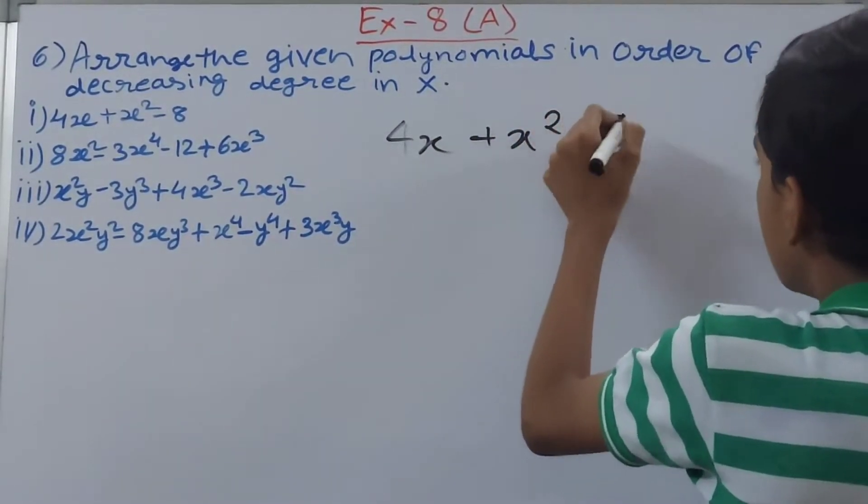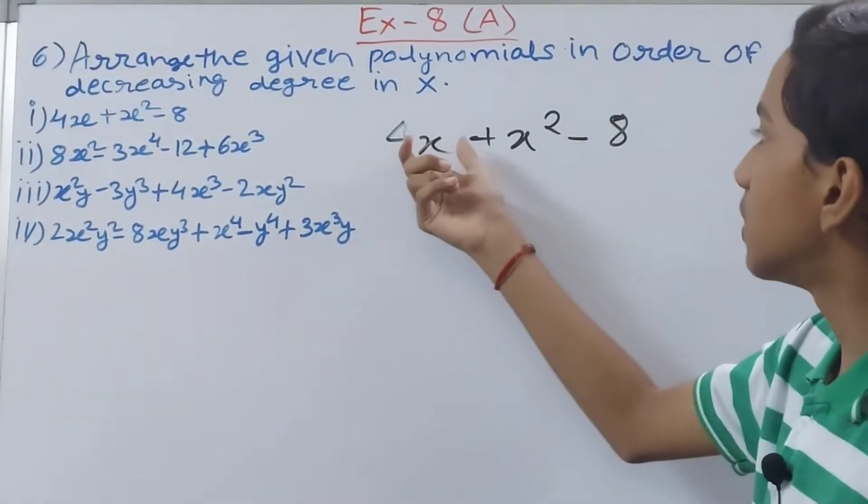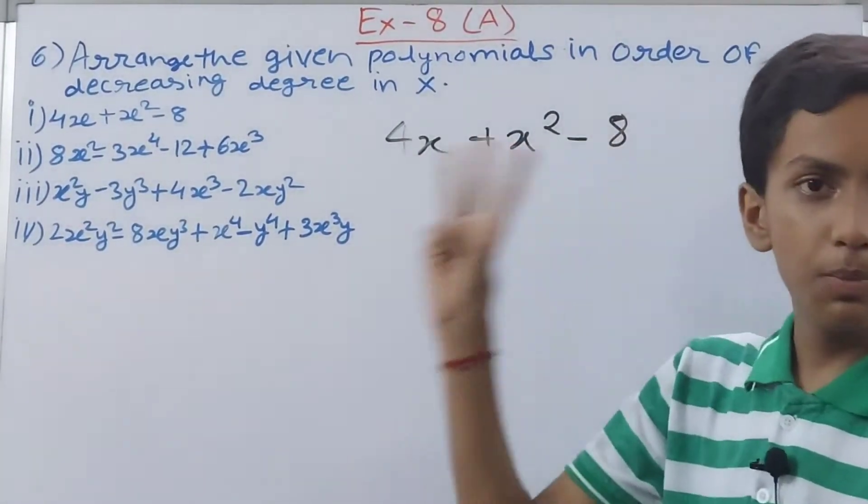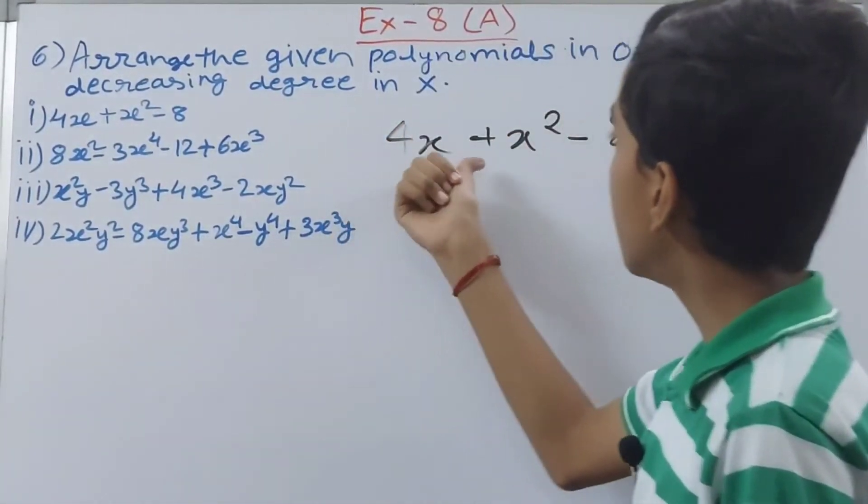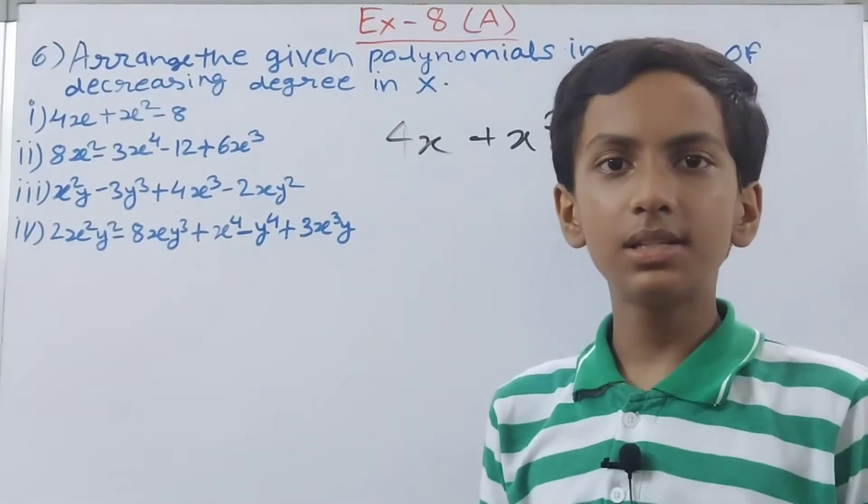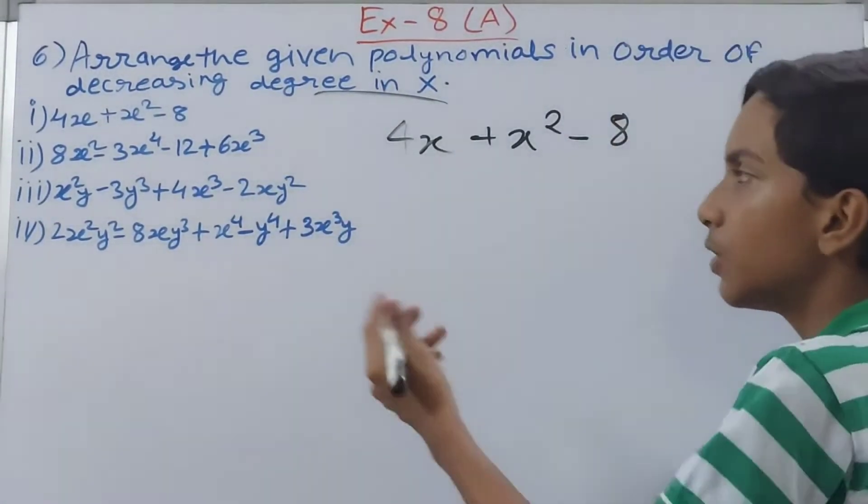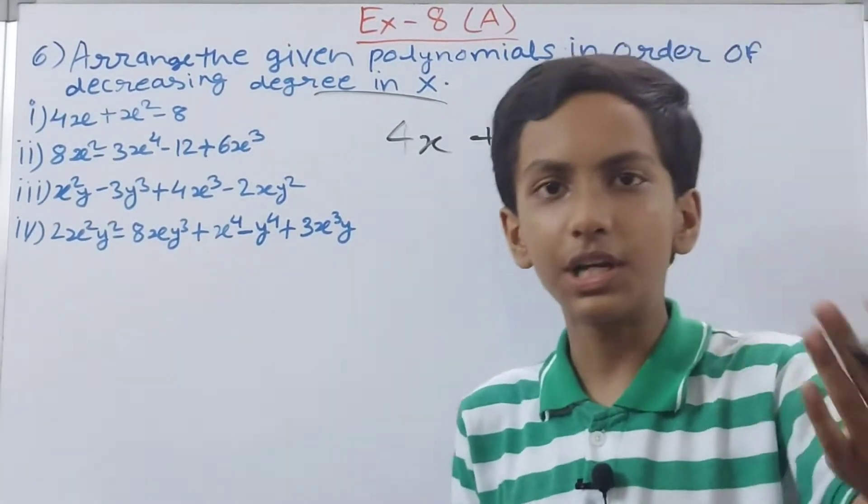Minus 8. Now what we have to arrange is these polynomials - you can see 1, 2, 3, three polynomials in this expression. We have to arrange them in such a way that the arrangement is in the decreasing order of degree of x.